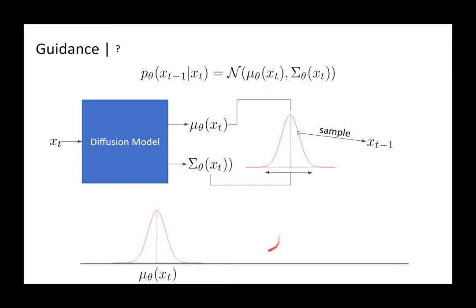Previously the distribution's mean was conditioned only on x_t, parameterized by theta. What guidance does is shift this mean by some guiding parameter — added to the mean and multiplied by a scale factor — so that when you sample from the new distribution you get a lesser noisy image that also satisfies the text condition. This is called classifier-based guidance, where the label given is just a class label.